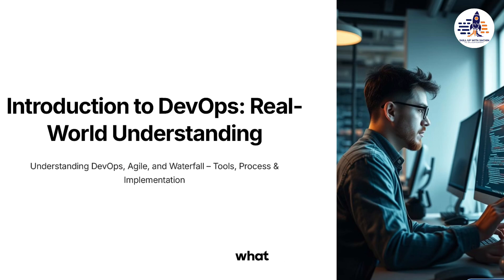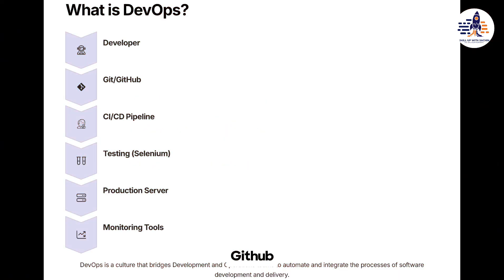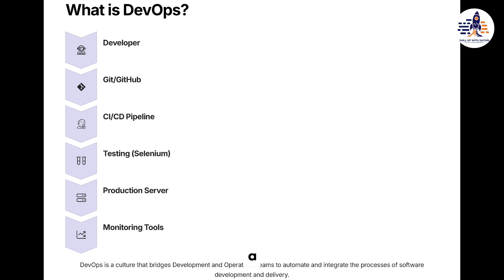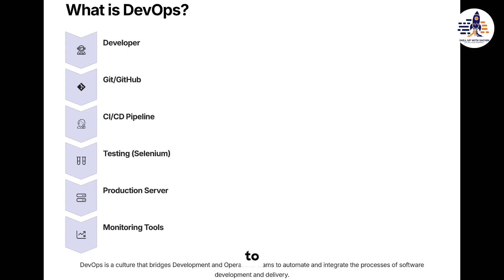What is your understanding about DevOps? So basically, when a developer creates a chunk of code, it is sent to a version control system like Git or GitHub. From there it goes for continuous integration — it will go to the production server and the testing server. From the testing server, Selenium will go through the code and do the testing part, and from production it will go directly to the customer end.